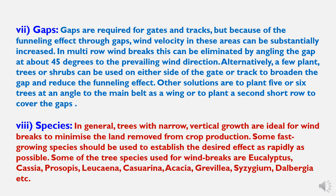Another solution is to plant a second short row to cover the gaps. Regarding species, in general, trees with narrow vertical growth are ideal for windbreaks to minimize land removed from crop production. Some fast-growing species should be used to establish the desired effect as rapidly as possible. Some tree species used for windbreaks are Eucalyptus, Cassia, Prosopis, Leucaena, Casuarina, Acacia, Grevillea, Dalbergia, etc.